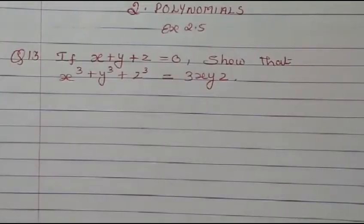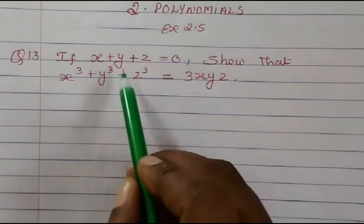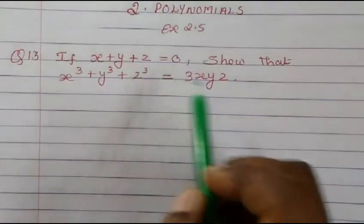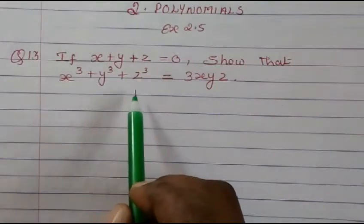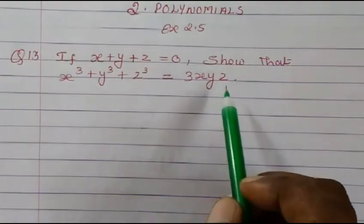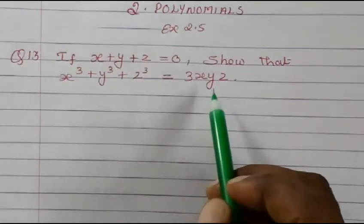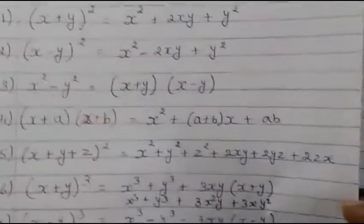Hi everyone, welcome to Mash Math. Today we are going to study from Class 9, Chapter 2 Polynomials, Exercise 2.5, Question 13: if x plus y plus z equals 0, show that x cube plus y cube plus z cube is equal to 3xyz. For this, we'll take the help of an identity that I have already explained.